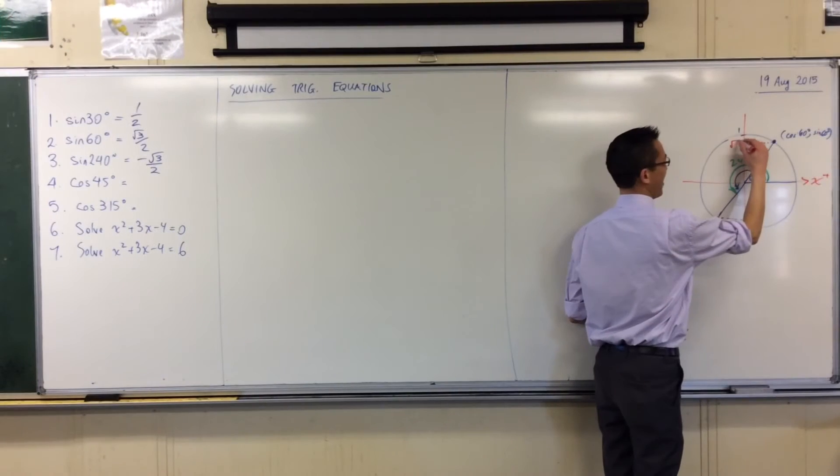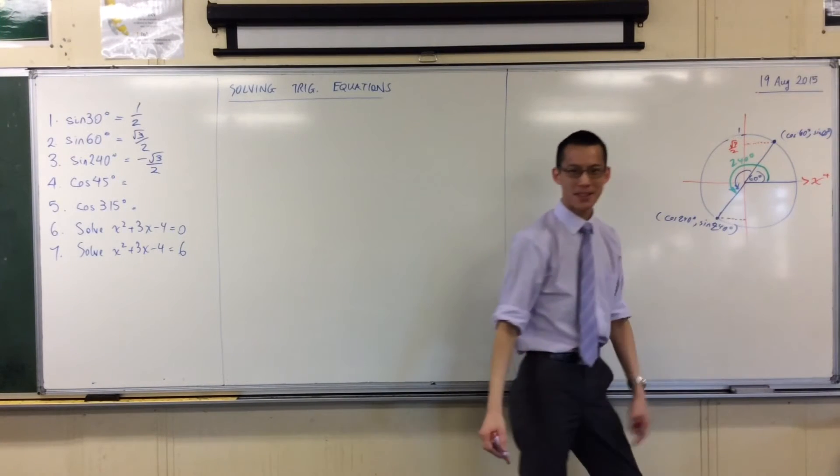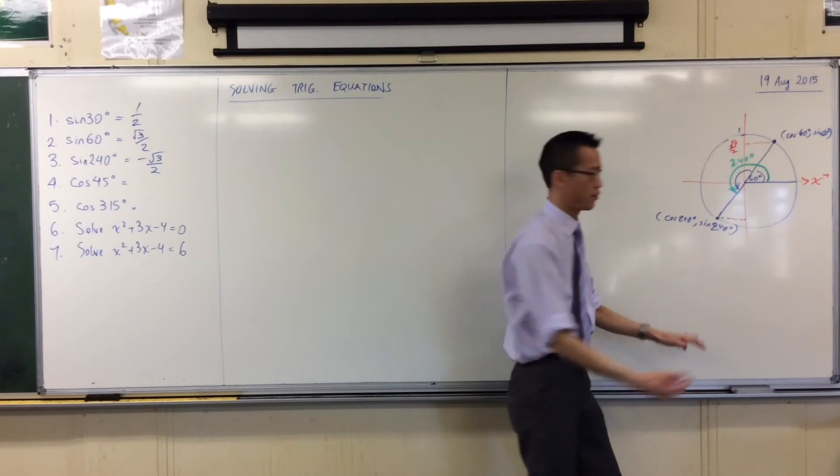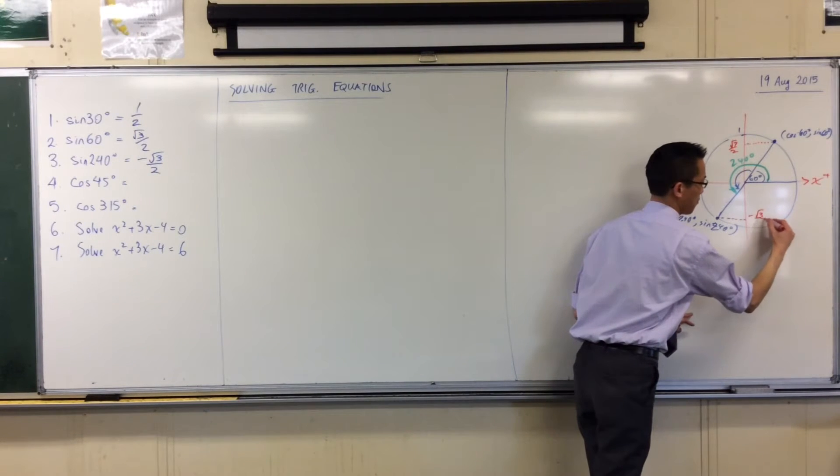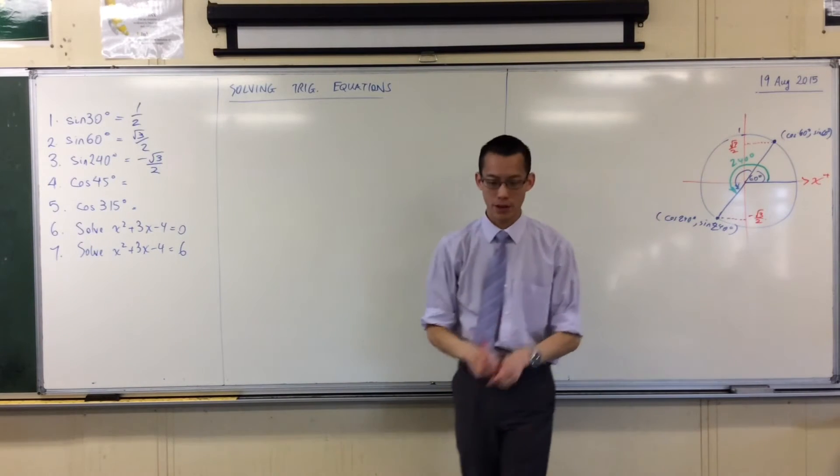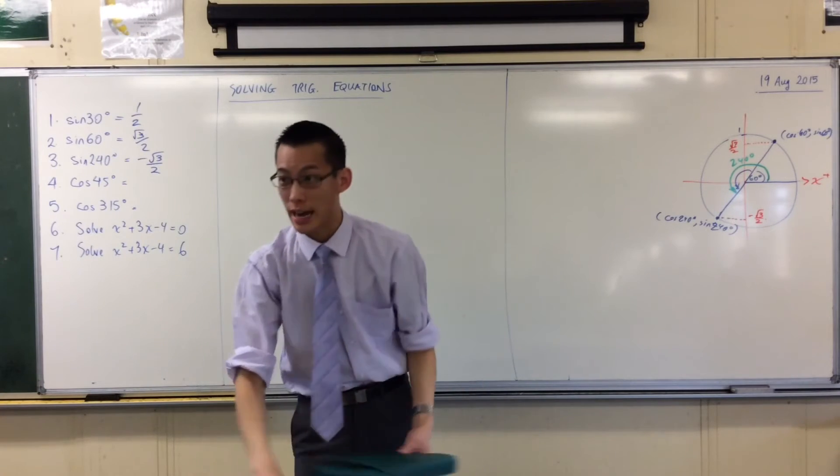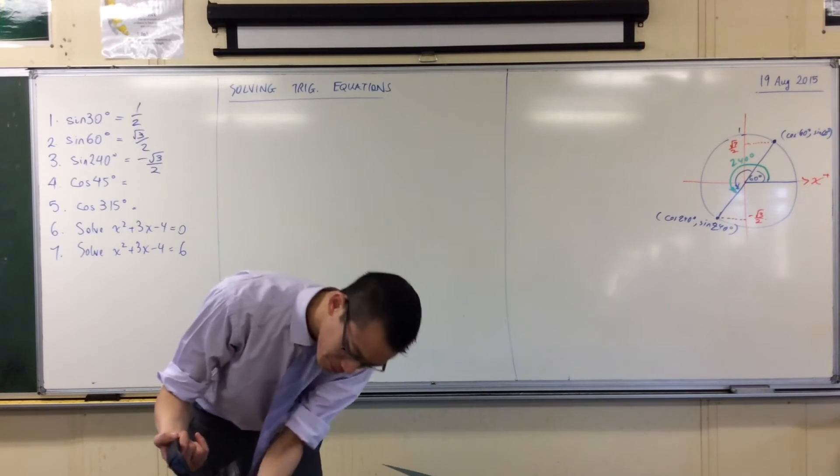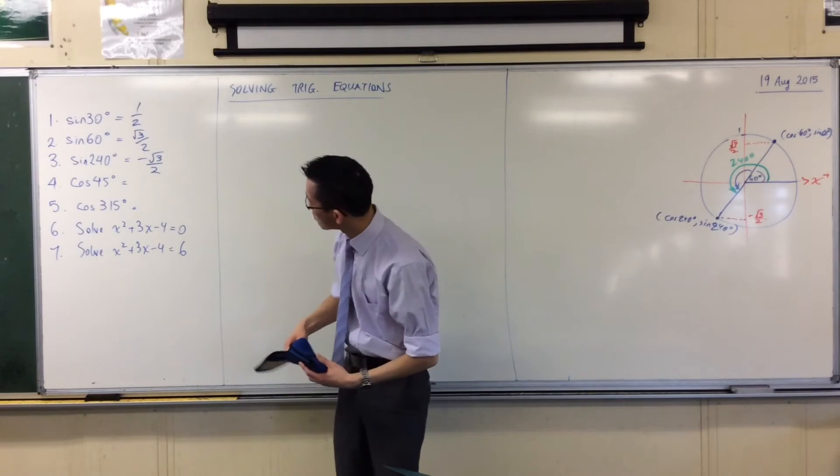If that's root 3 on 2 up the top, then I'm going to get negative root 3 on 2 down the bottom. One more trick. Remember, if you haven't already, grab your calculator out, because when you pop in sine 60, I showed you this trick before.